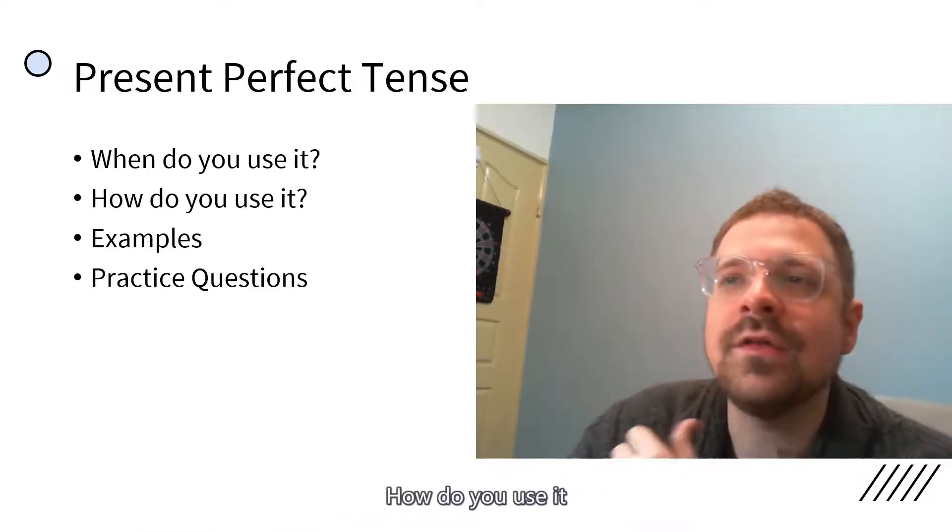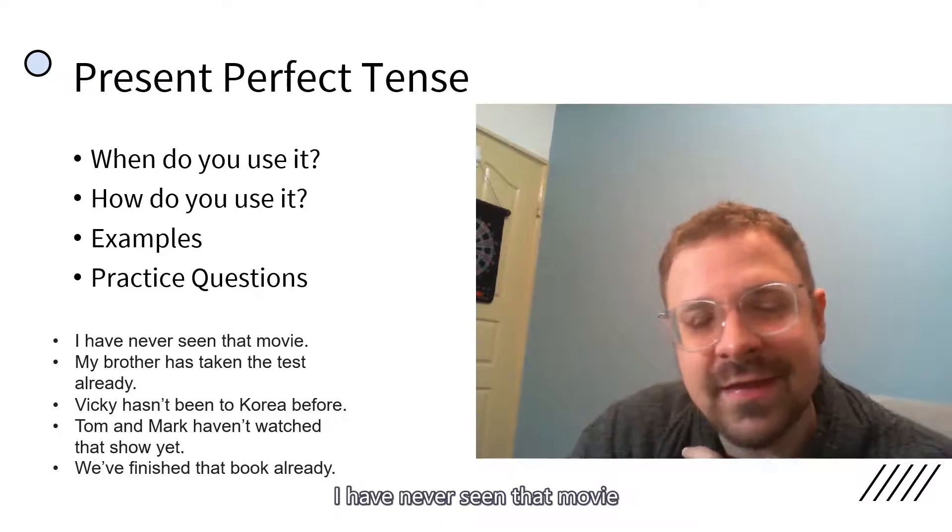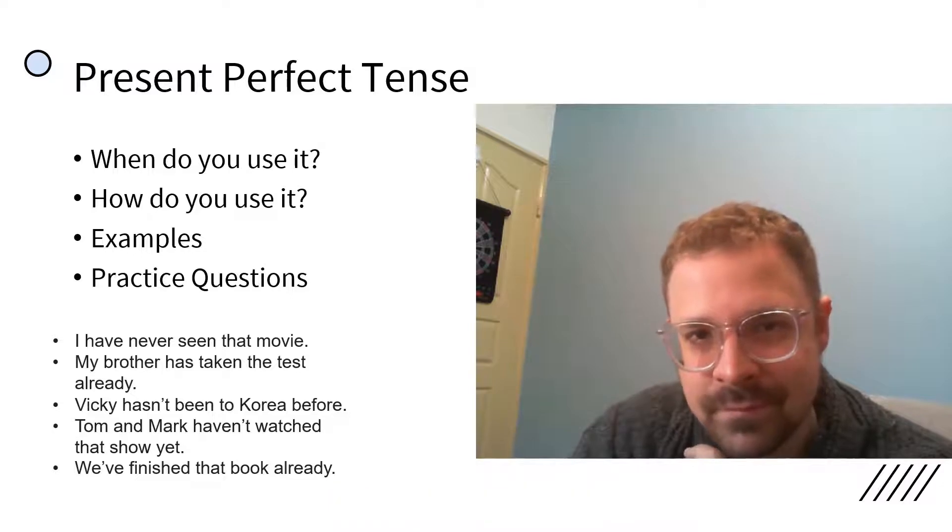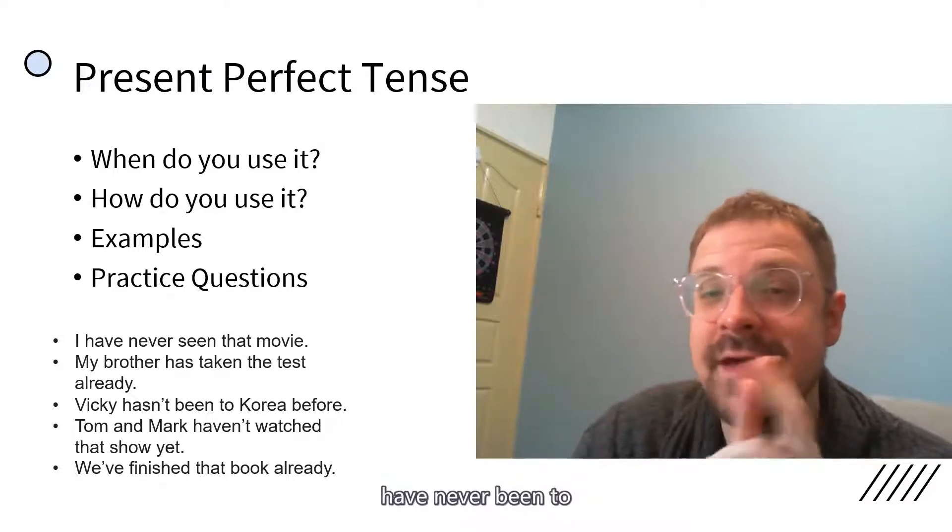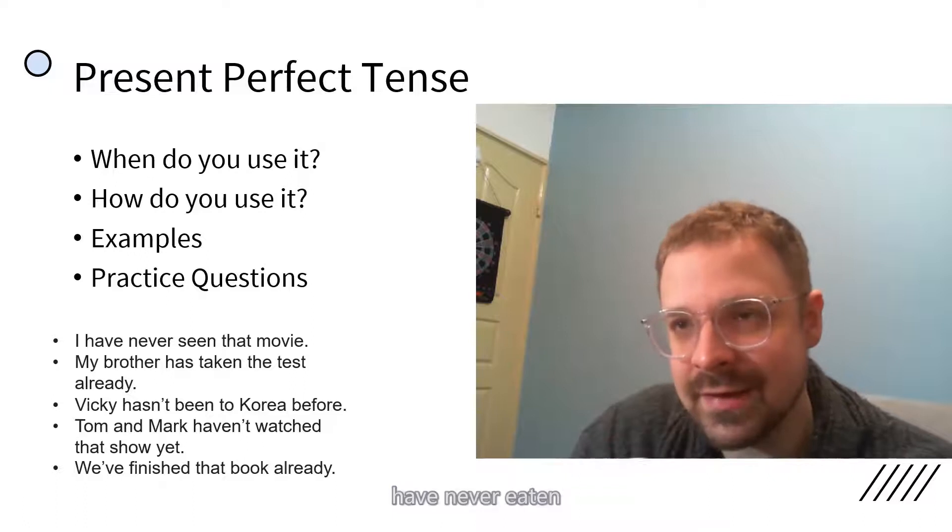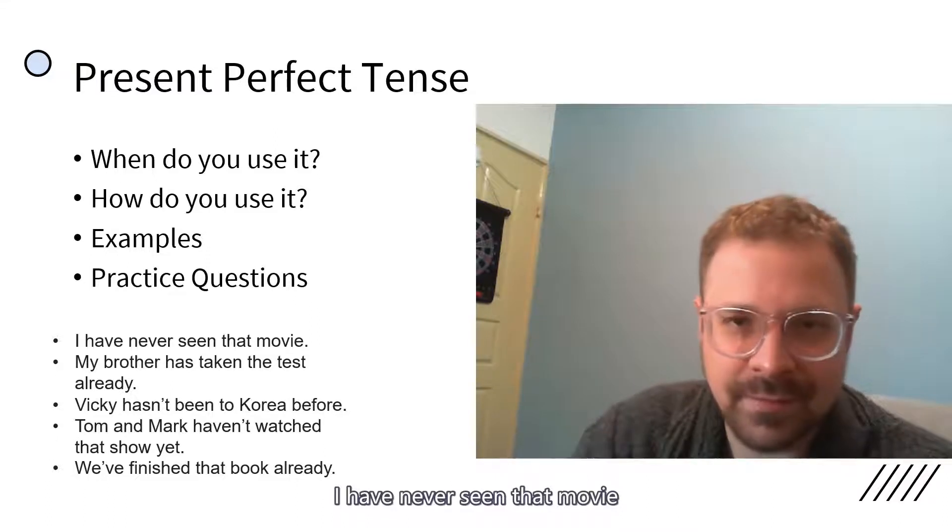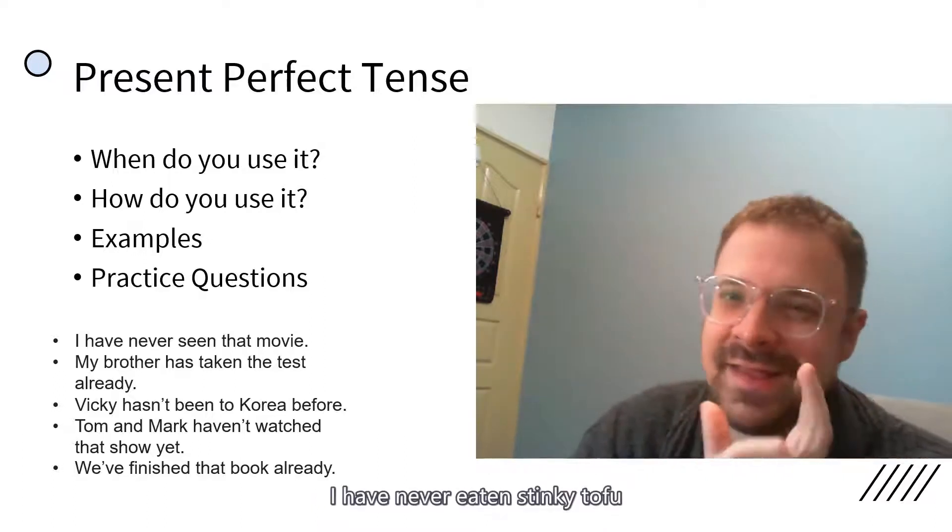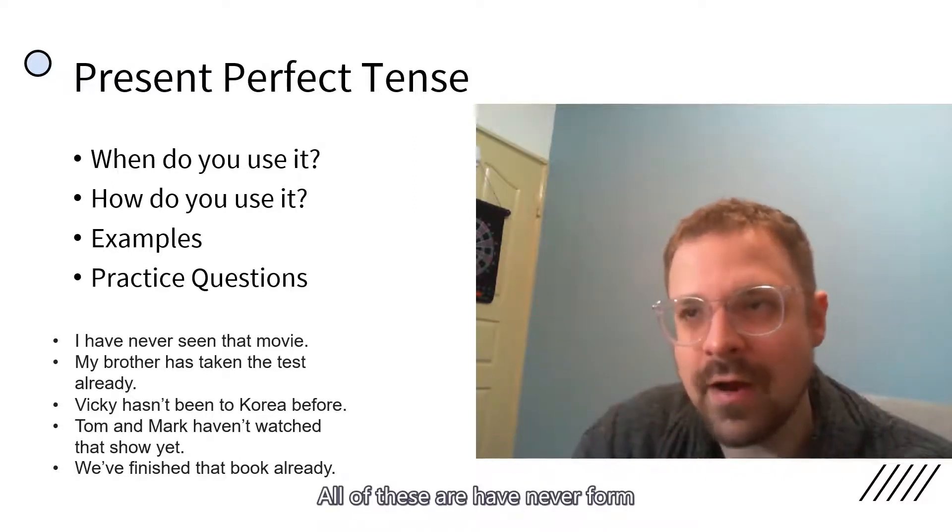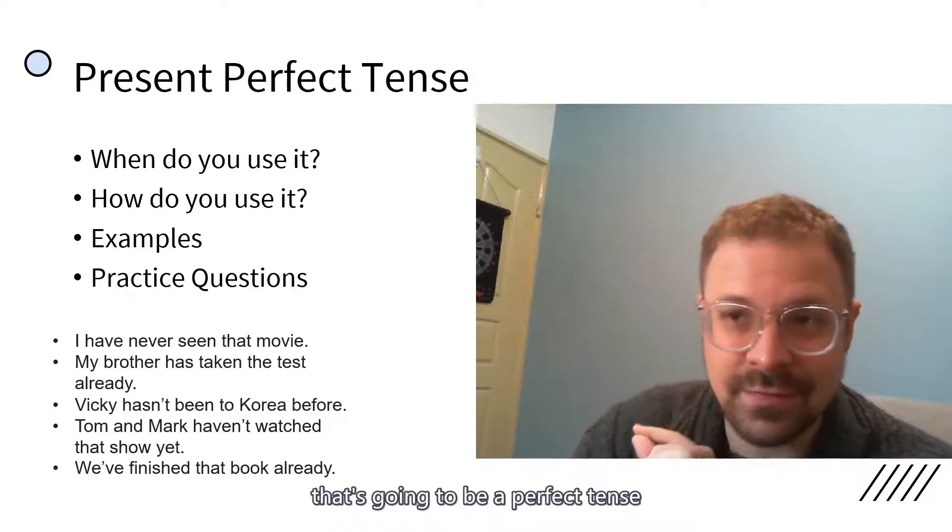So how do you use it or examples of how to use it? I have never seen that movie. So this is a pattern that you should know. Have never done. Have never seen. Have never been to. Have never eaten. I have never blah blah blah. So I have never seen that movie. I have never been to Disneyland. I have never eaten stinky tofu. All of these are the have never form. And when you see a have never sentence, guess what? That's going to be a perfect tense.